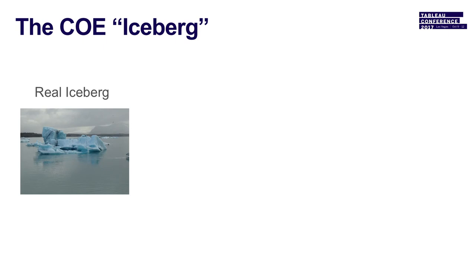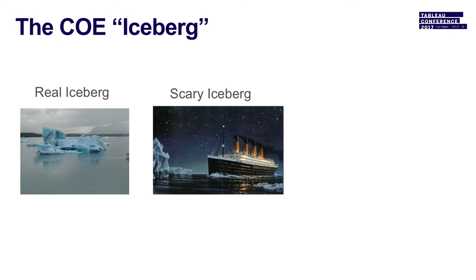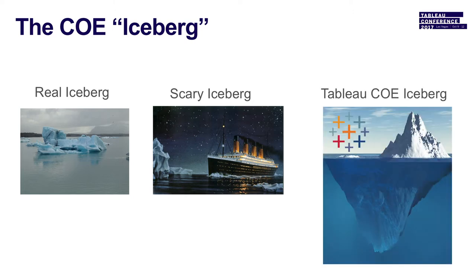I'm going to introduce a concept called the COE Iceberg. An iceberg seemed like a good analogy. The key thing about an iceberg is that most of the mass is below the surface of the water - most of an iceberg is not what you see, it's what you don't see. A Tableau COE functions in much the same way: much of what it takes to be successful is not necessarily visible to the naked eye when you first begin thinking about it. Hopefully I can uncover some of those things that are underneath the water and help make sure we're identifying not just the things we know about, but the things that are a little more hidden and difficult to predict.